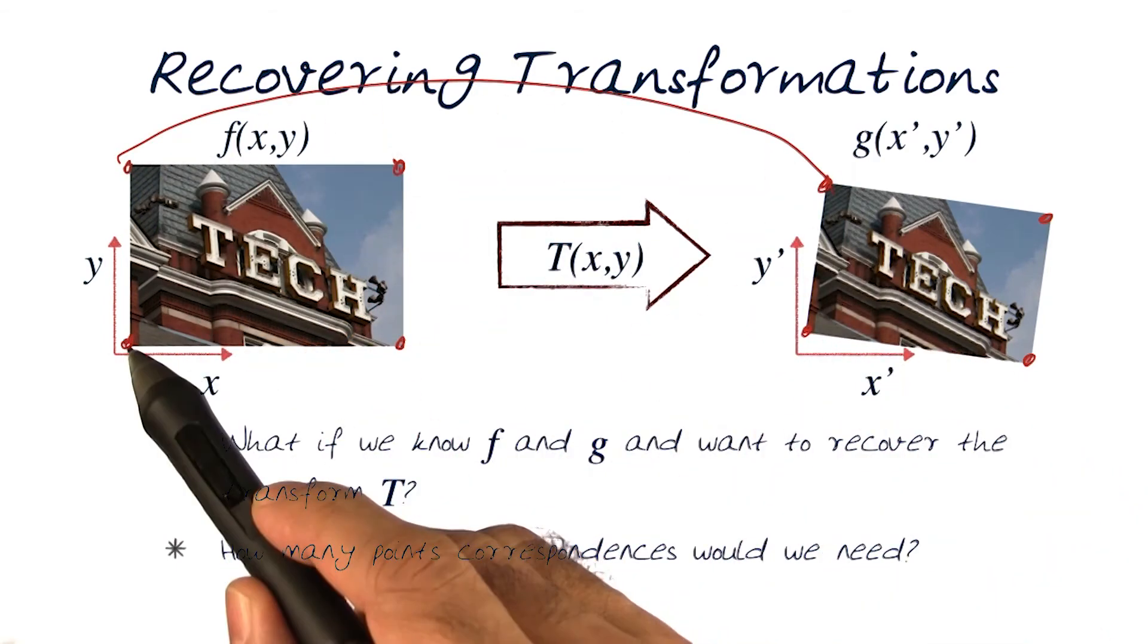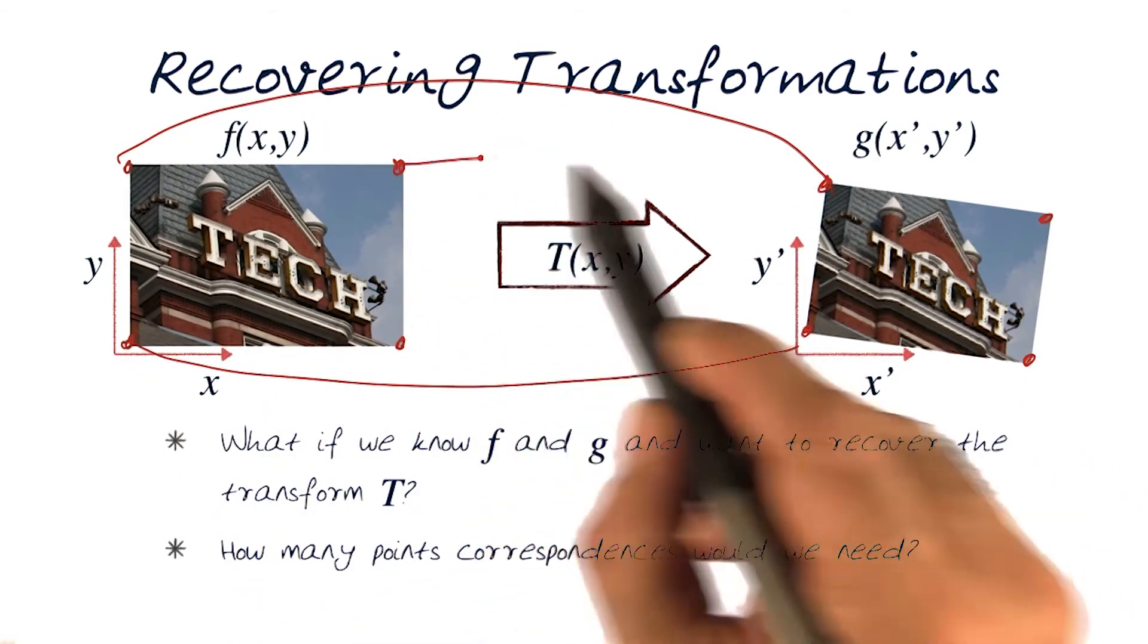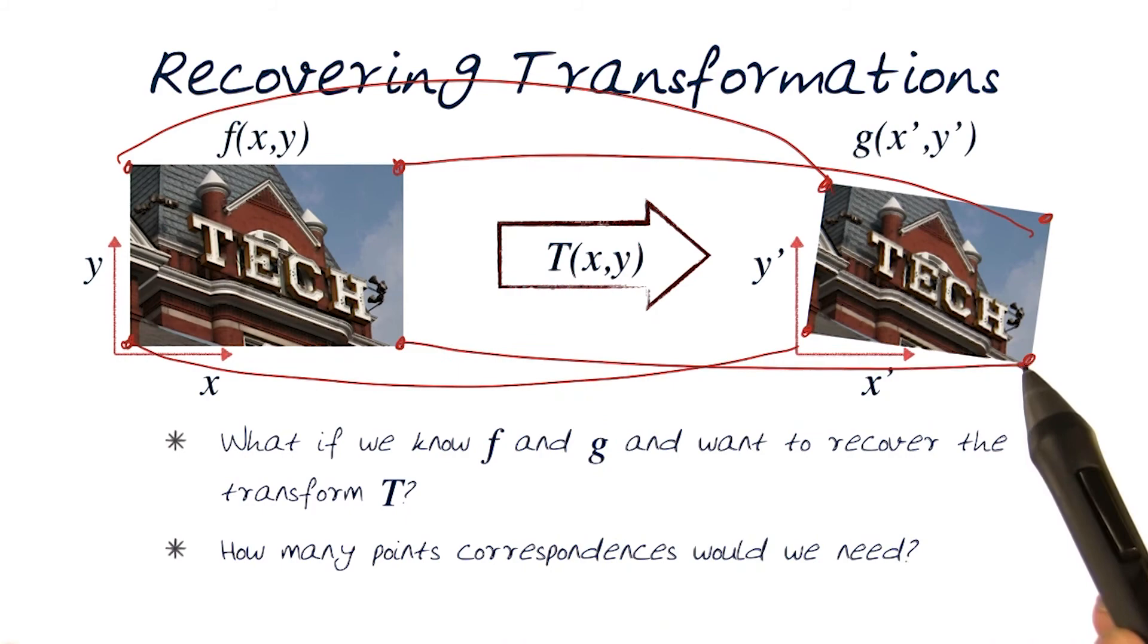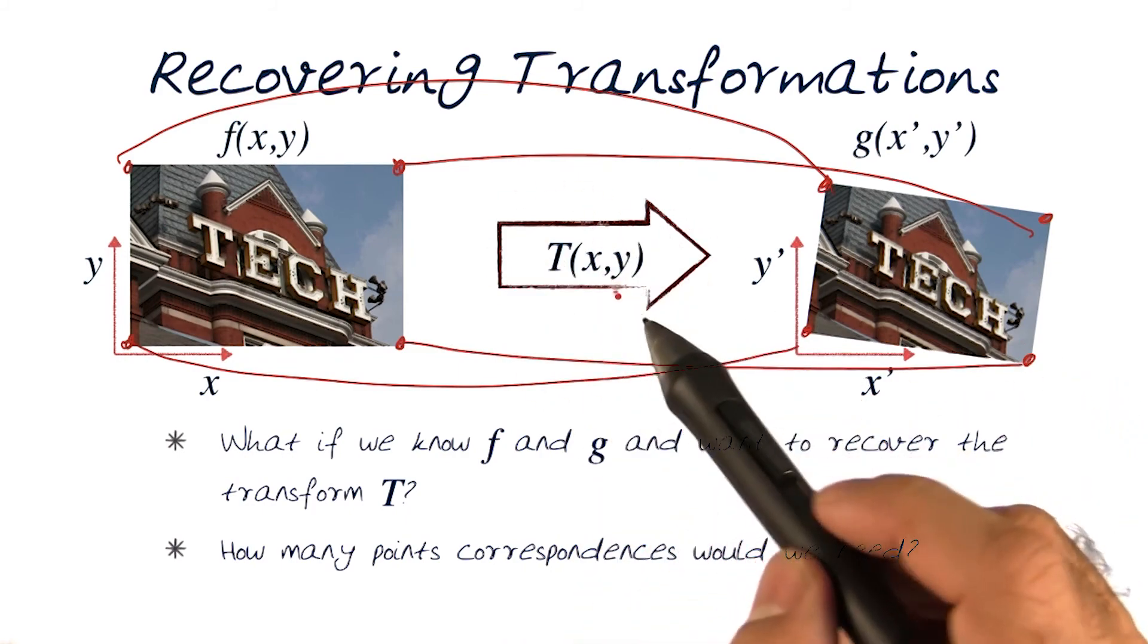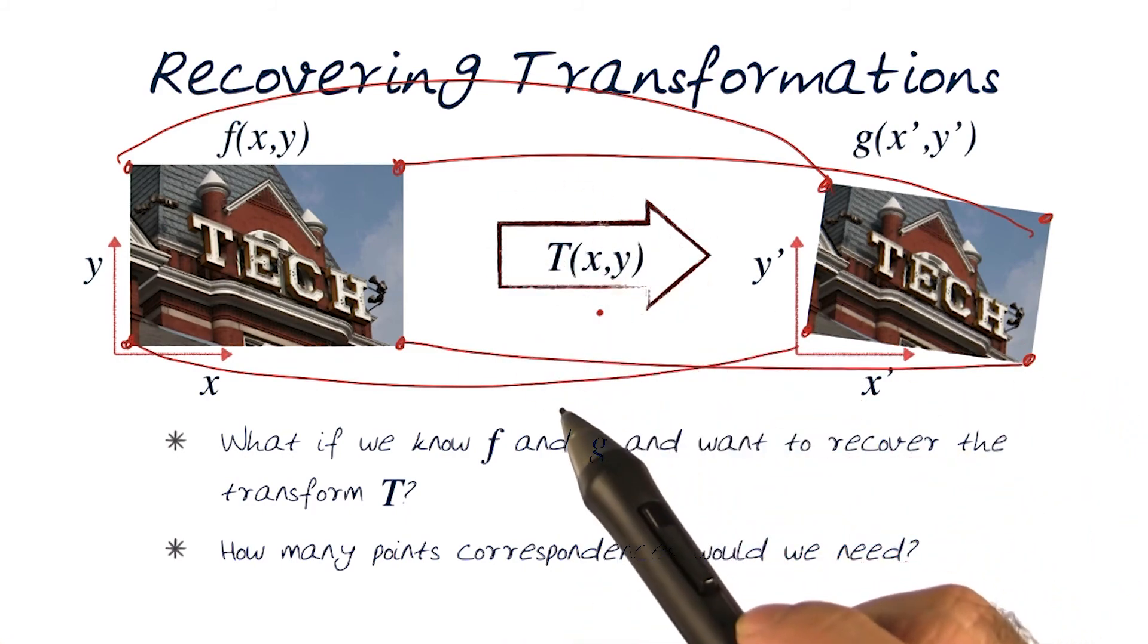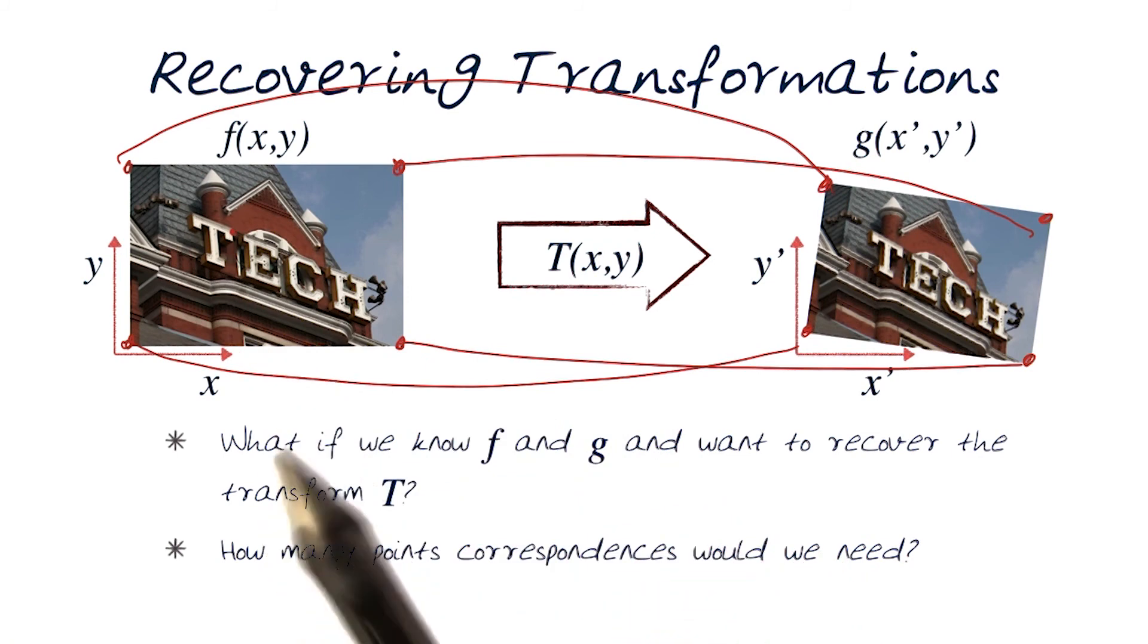All right, so if I know these correspondences, I would be able to figure out the transformation function. But how many do I need to know is the question. Do I also need to know some inside? Those are important questions, let's get to that, and we would do this in forms of quizzes.